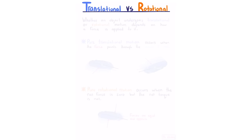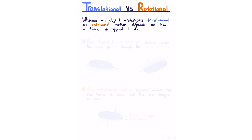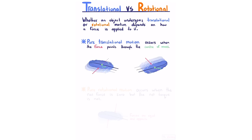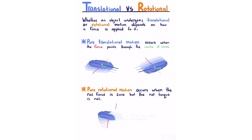Translational versus rotational motion depends on how a force is applied. Pure translational motion occurs when the force points through the centre of mass. Pure rotational motion occurs when the net force is zero but the net torque is not — for example, equal and opposite forces not acting through the centre of mass produce no net force but do produce a net torque, resulting in rotational motion.